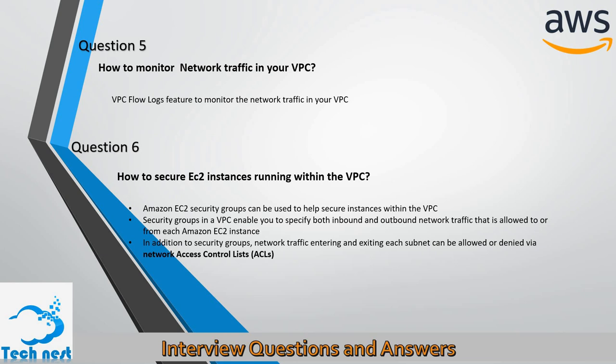Question six: How do you secure EC2 instances running within the VPC? There are two ways. First, Amazon EC2 security groups can be used to secure instances within the VPC. Security groups enable you to specify both inbound and outbound network traffic allowed to or from each Amazon EC2 instance. Second, network traffic entering and exiting each subnet can be allowed or denied through network access control lists, that is, ACLs.